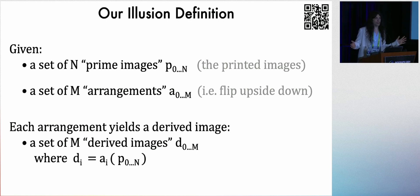So our definition for our types of illusions are that we have a set of images that gets rearranged to turn into another set of images. The original set of images, the ones that we physically make, are called prime images. And one of them might be, for example, that dog that might be the prime image. And when we turn it upside down, we can get a derived image, such as a sloth.